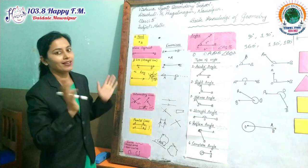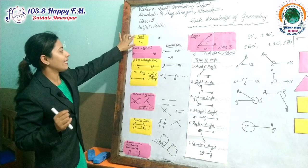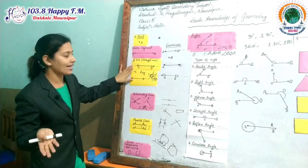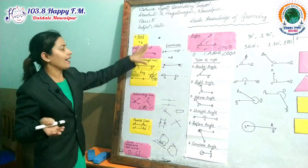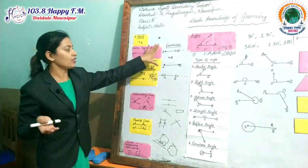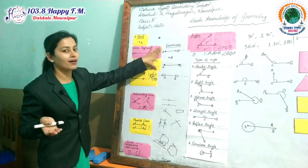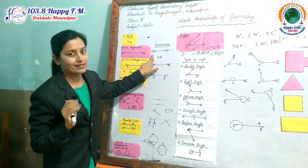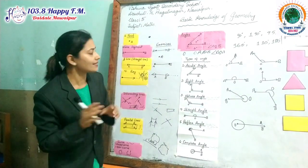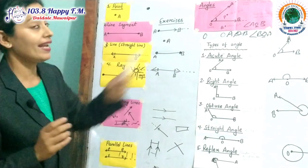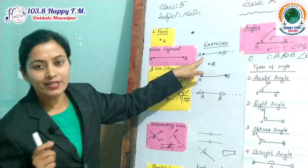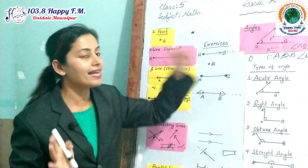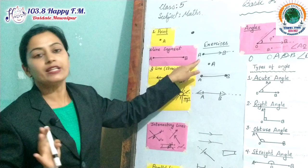I think you are very clear about the four concepts: point, line segment, line or straight line, and ray. I have written some exercises here that can make you clearer. Please guess and try to give the answer. What type of line is this? Can you guess? This is a ray — because the origin point is fixed and the ending point is not fixed here; it can be extended. So it is a ray.